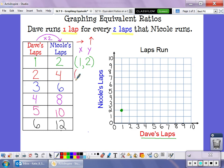My next ordered pair, I'm going to have Dave's laps and Nicole's laps. So Dave ran two laps and Nicole ran four. So I'm going to put my dot here. And I'm going to keep following this pattern with Dave's laps and Nicole's laps. Dave ran three, Nicole ran six, until I graph as many points as possible.